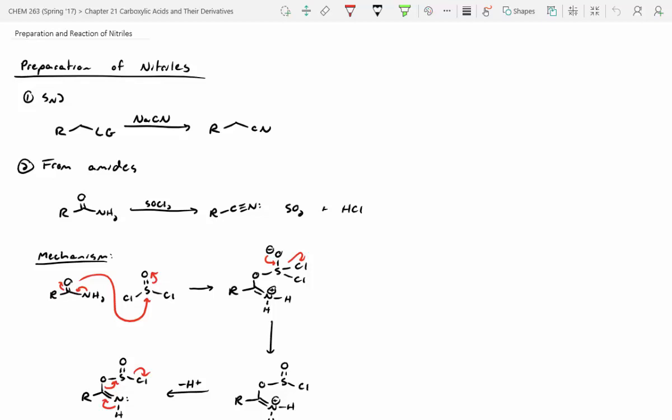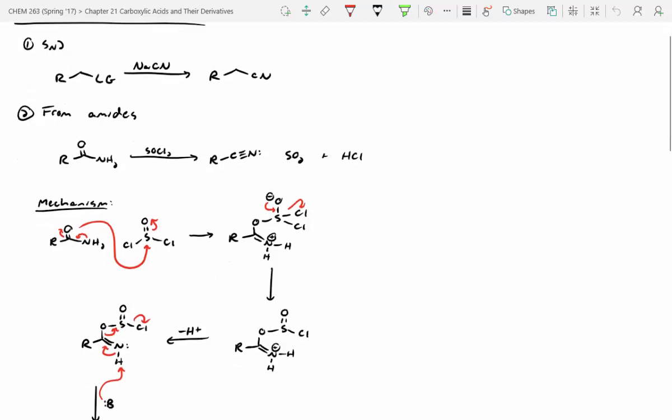All right, so we didn't have enough time to finish up our reactions of nitriles, but on Thursday we talked about preparation of nitriles. We said we can do this using SN2 chemistry, or we can treat an amide with thionyl chloride and get to a nitrile that way, and we covered that mechanism.